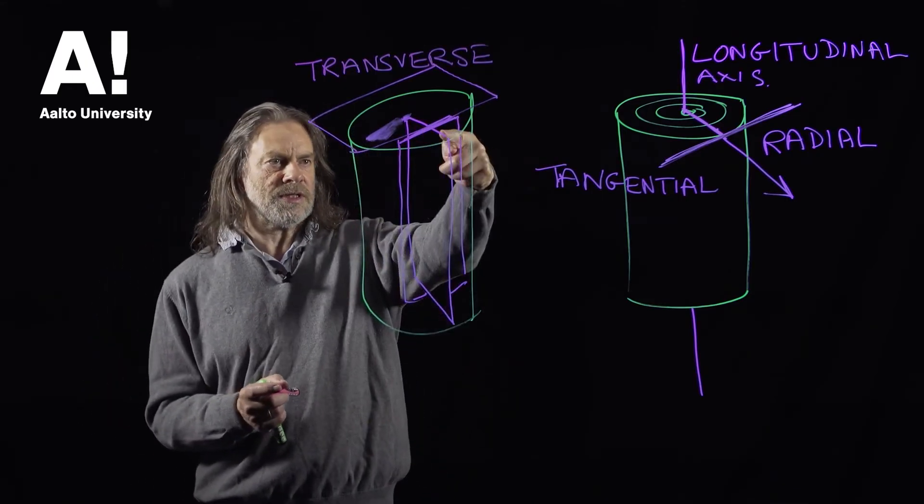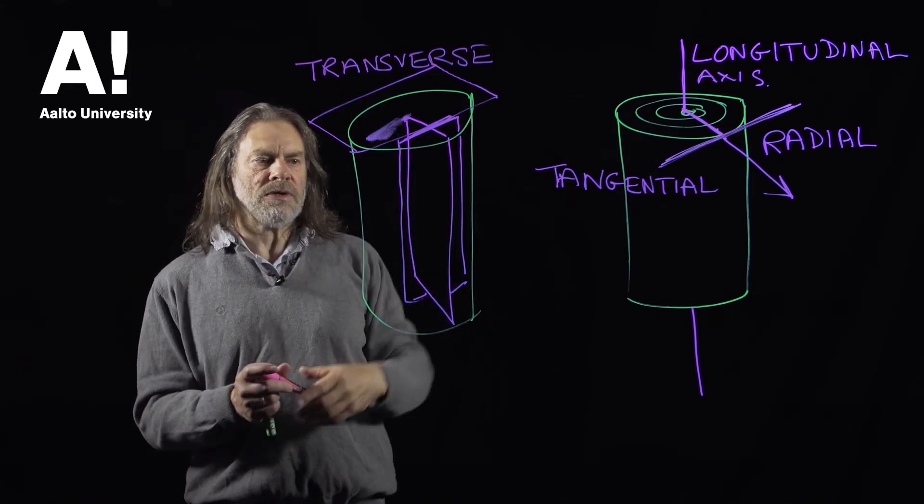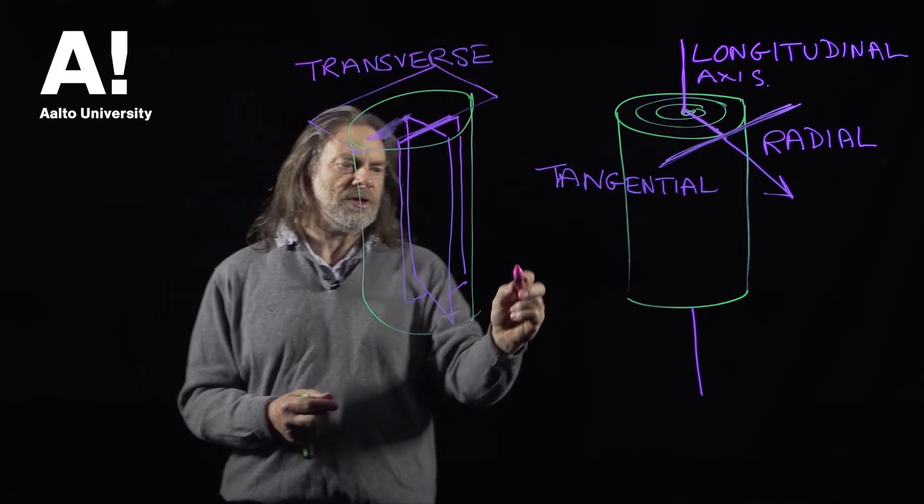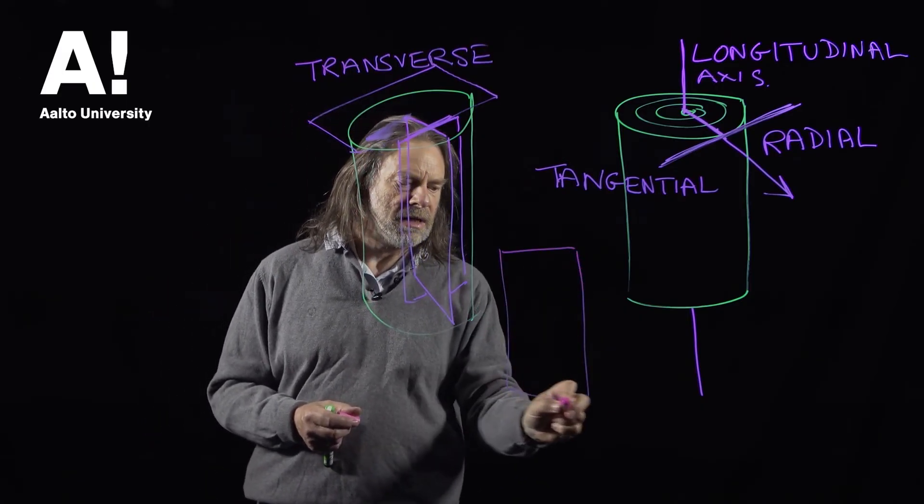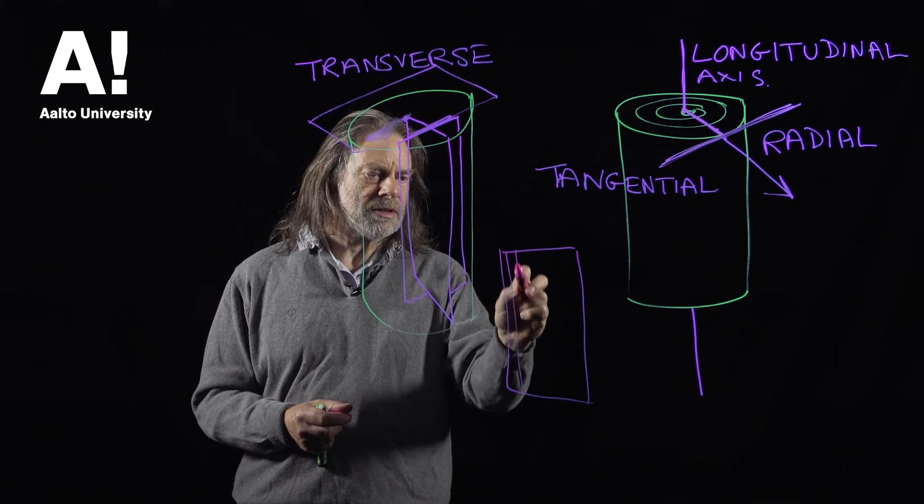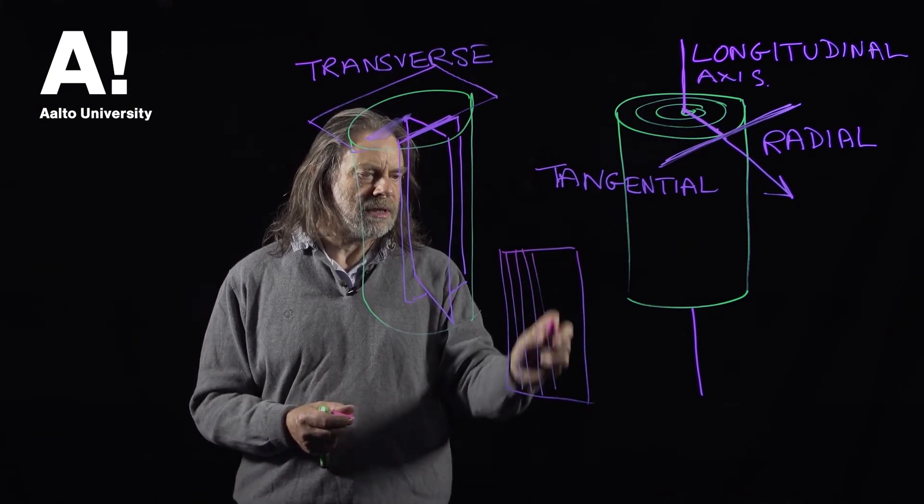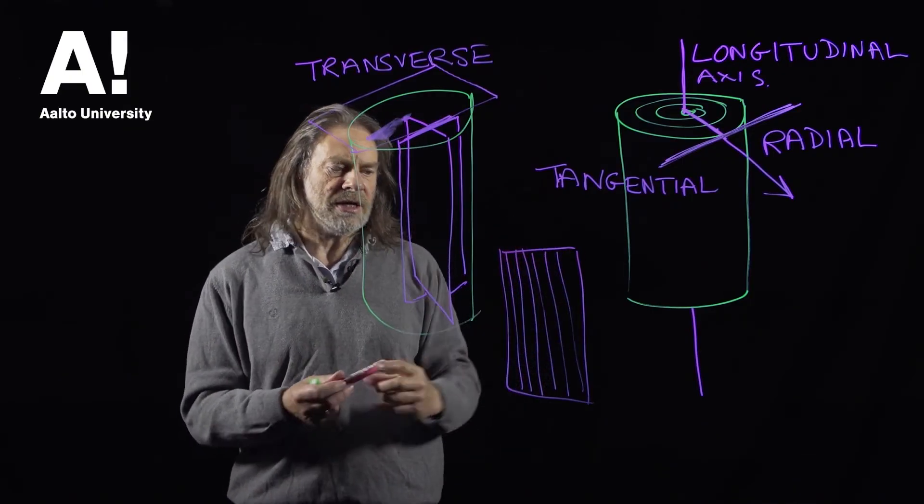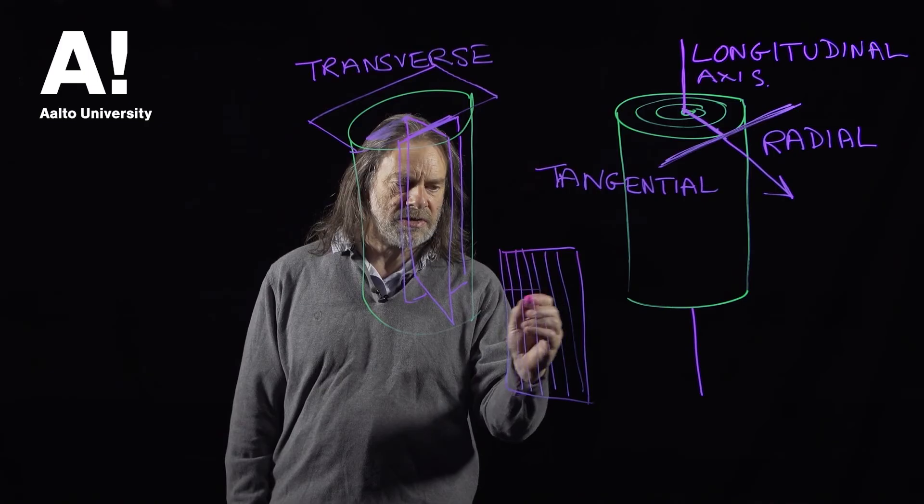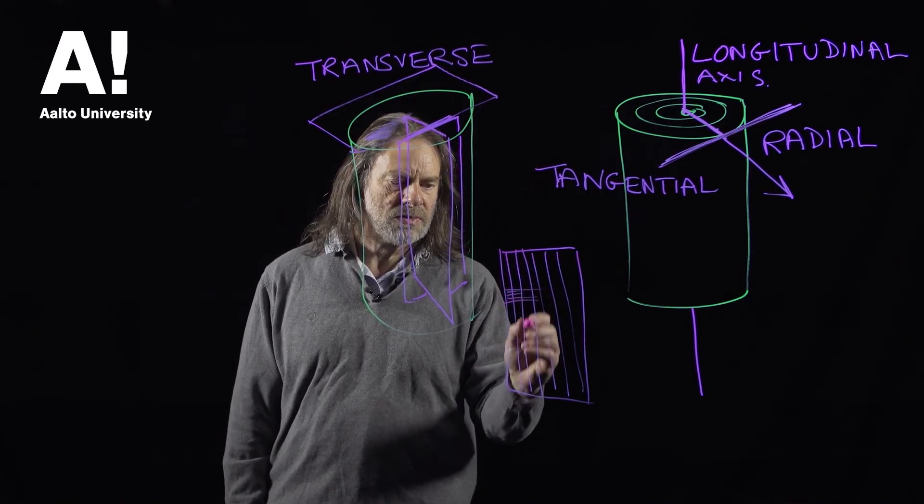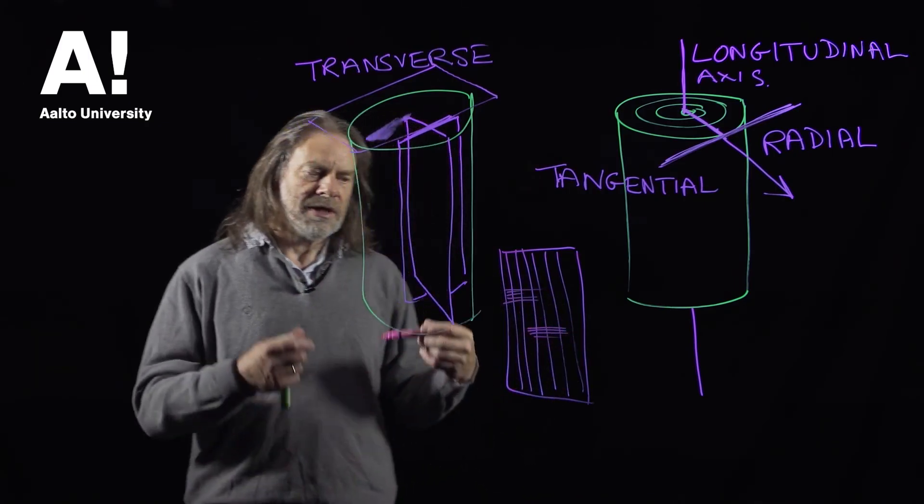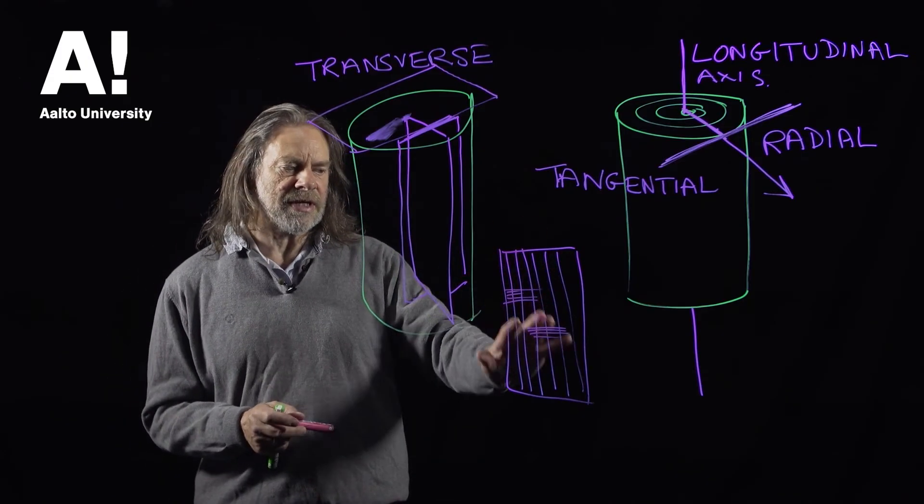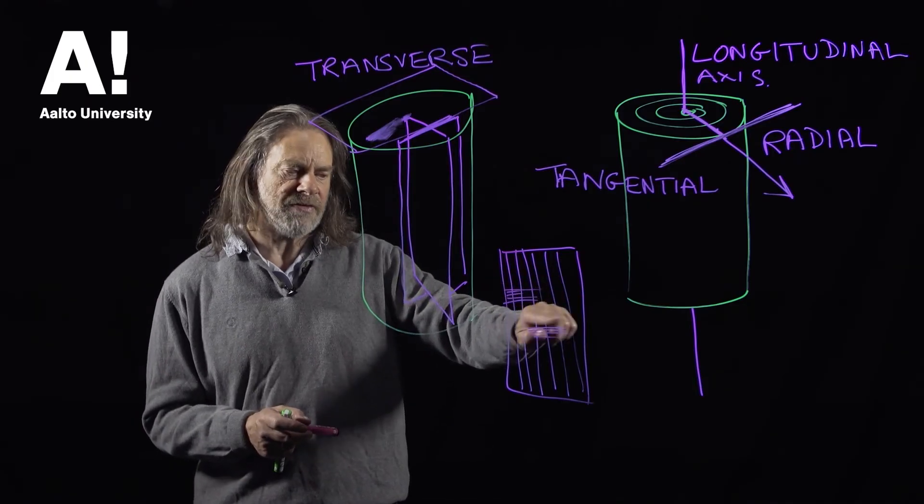So if we've got this plane here which is the radial longitudinal, if we took a section of wood from that and looked at it, we would see all the growth rings looking in this direction like that. And then in that structure we might see the ray cells running in this direction as well. And depending on the type of wood, the ray cells would either be very prominent or they would be hardly visible.